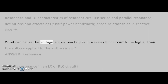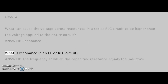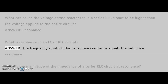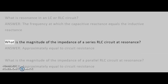What can cause the voltage across reactances in a series RLC circuit to be higher than the voltage applied to the entire circuit? Answer: Resonance. What is resonance in an LC or RLC circuit? Answer: The frequency at which the capacitive reactance equals the inductive reactance.